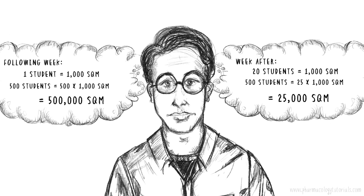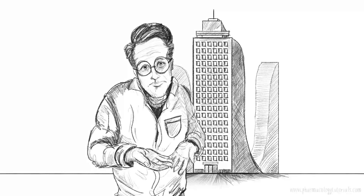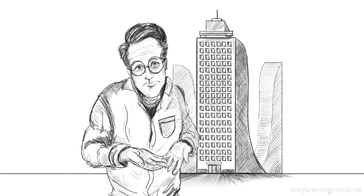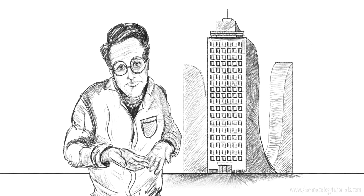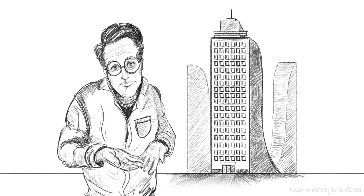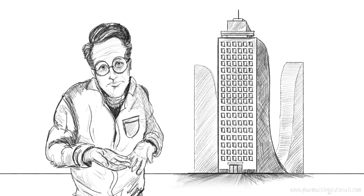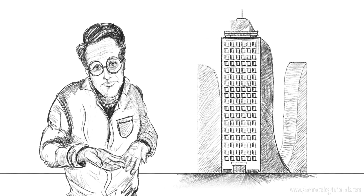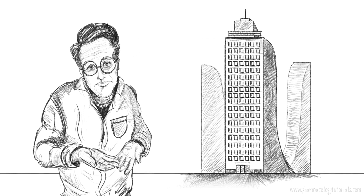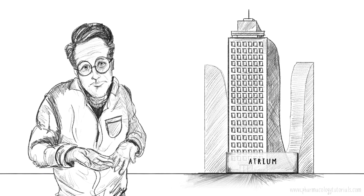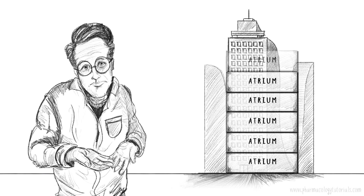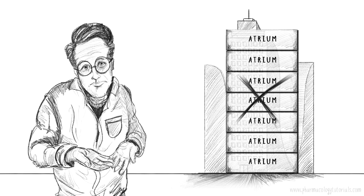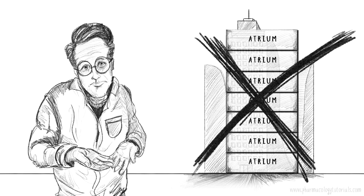So what was happening? Mr. Tan realized that he had assumed wrongly that the students had distributed evenly throughout the mall. His method for estimating the mall size would only be accurate if the atrium accurately represented every other part of the sprawling mall — and unfortunately, this was not true.